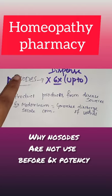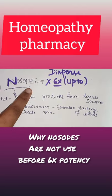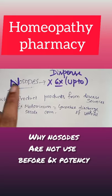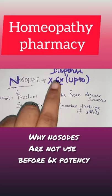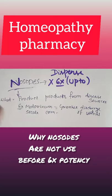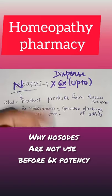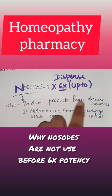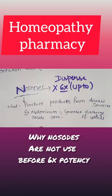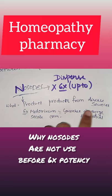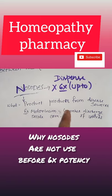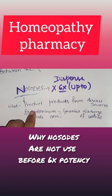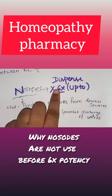Today we will discuss nosodes. We should remember that nosodes cannot be dispensed up to the 6th potency. Nosodes are medicines produced from discharges — for example, the medium produced from gonorrhea discharge or urethral discharge. That is why we do not give nosodes up to the 6th potency.